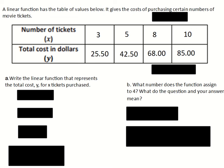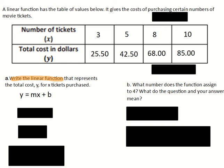So it says write the linear function that represents the total cost, y, for x tickets purchased. So we're writing the linear function, so I'm going to start by writing my y equals mx plus b.